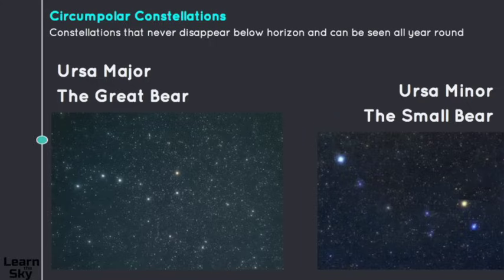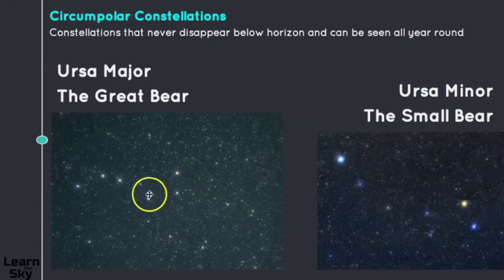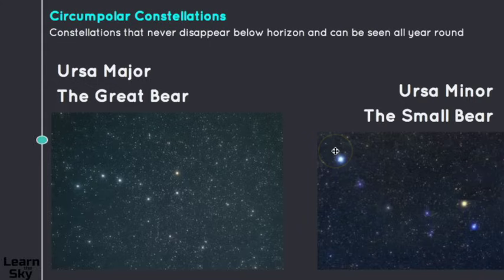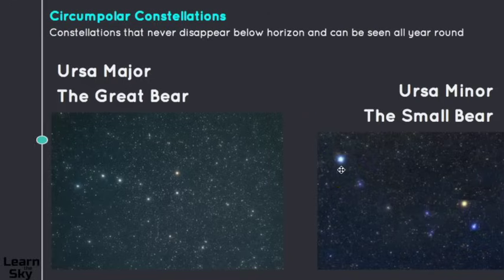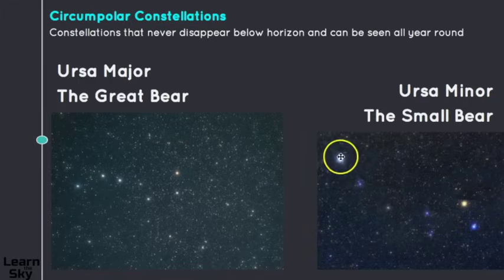There are five circumpolar constellations I'll be going into detail about. One is Ursa Major, the great bear — you can probably see the Big Dipper within the bigger constellation of Ursa Major. We also have Ursa Minor, known as the small bear. Its dipper shape is slightly different from the Big Dipper: the handles go differently, the brightness is different, the size is different. And this star right here is Polaris — the last star in the handle of Ursa Minor.